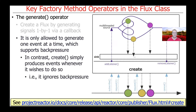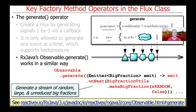In contrast, the create method that we looked at before — one of the other factory methods discussed earlier in the context of the Flux class — will simply produce events whenever it wishes to do so. In other words, it ignores back pressure. Therefore, you can end up creating many events, far more than you could perhaps process, based on the way in which you've set up your concurrency architecture in a given implementation using Project Reactor and Flux.